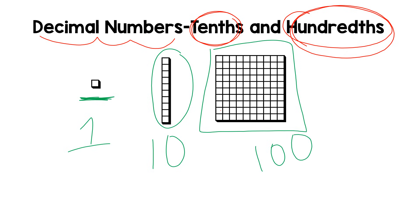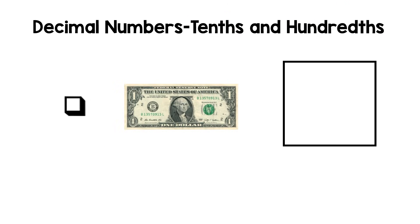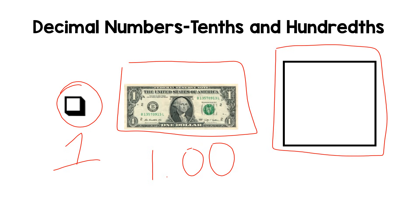Now today we're specifically going to talk about one and how we can break one apart into smaller parts. So here is one unit. This is one dollar represented like this, and this is just one whole square. Now we're going to take each of these and we're going to break them up into parts using decimals and fractions.